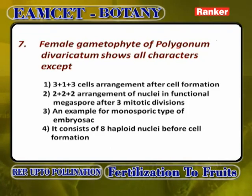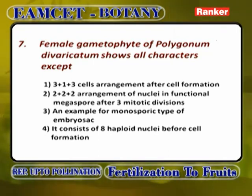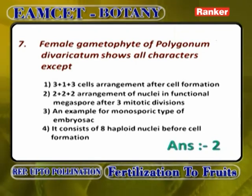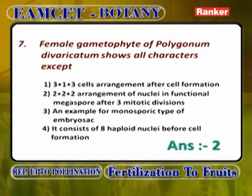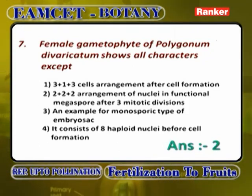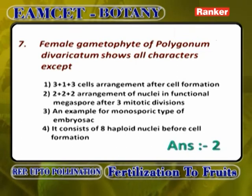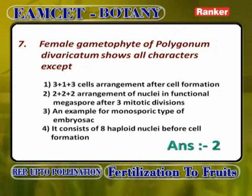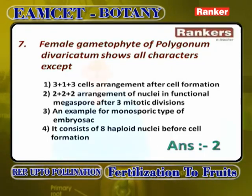Female gametophyte in Polygonum type shows all characters except: 3+1+3 cell arrangement after cell formation; 2+2+2 arrangement of nuclei of functional megaspore after 3 mitotic divisions; an example of monosporic type of embryo sac; it consists of 8 haploid nuclei before cell formation. The wrong option is the 2+2+2 arrangement — it cannot be 2+2+2 arrangement.